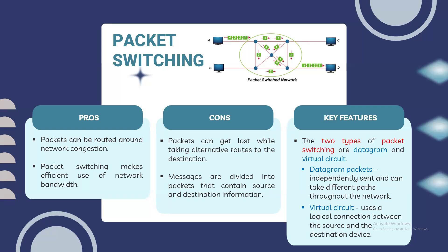Circuit switching establishes a dedicated communication channel between two network nodes throughout the network before they may communicate — essentially obtaining a dedicated single physical path connection. Packet switching, on the other hand, can be routed around network congestion. It is a method of data transmission over a network. There are two types: datagram packets, which are independently sent and can take different paths throughout the network; and virtual circuit switching, which uses a logical connection between the source and destination device. Data is broken into packets before being sent, and each packet contains control information and data, then reassembled at the destination to reconstruct the original data — making this a connectionless network switching method.